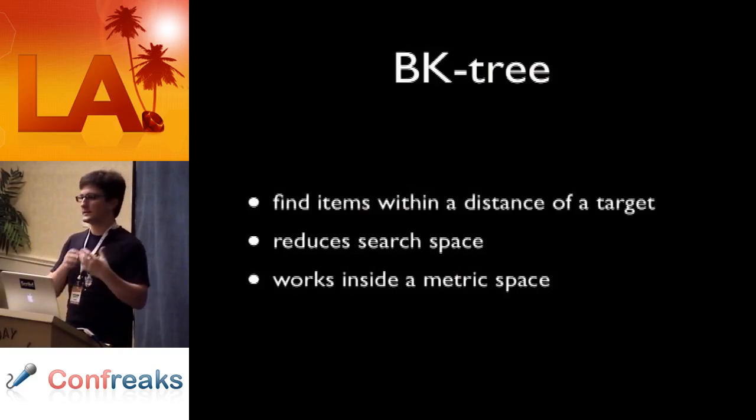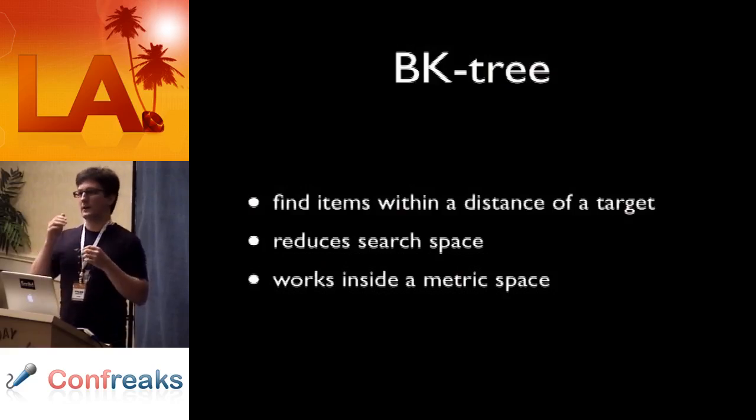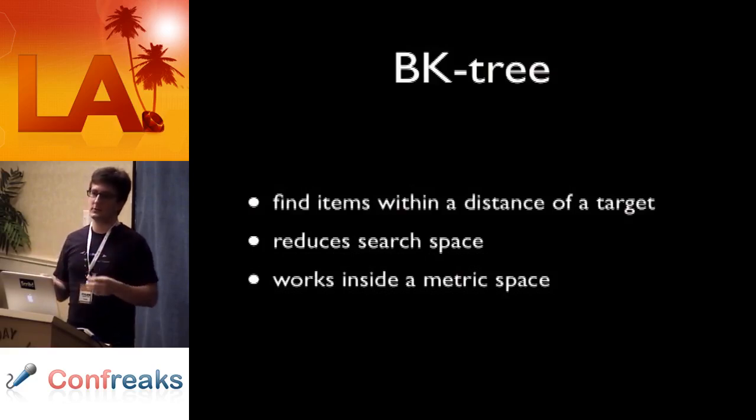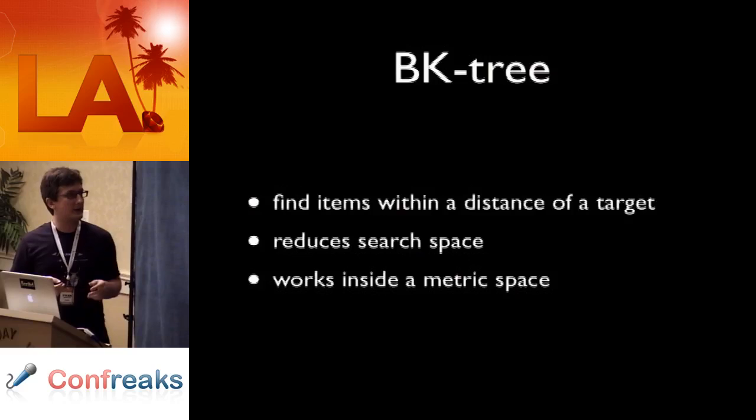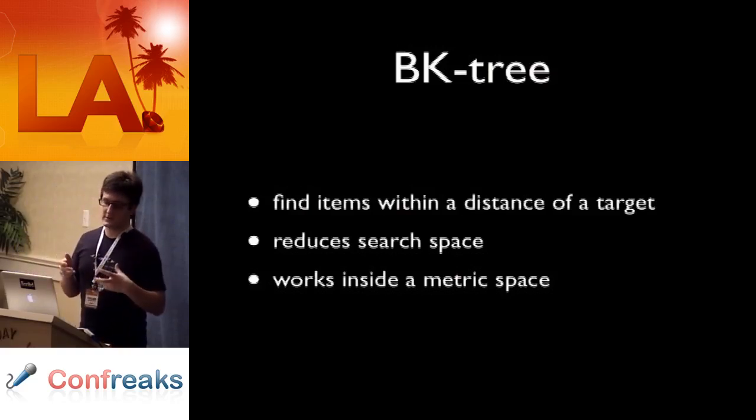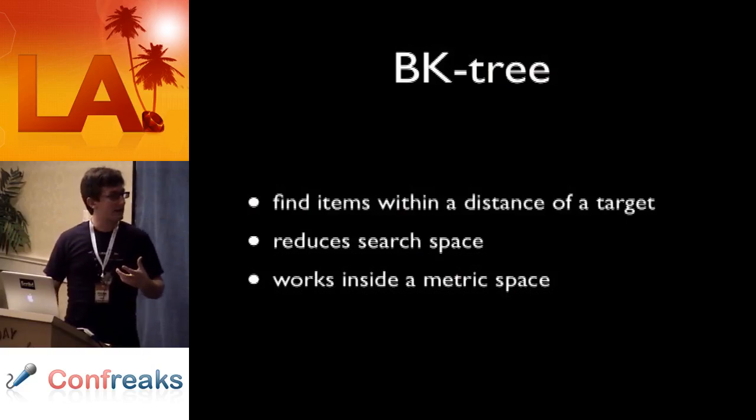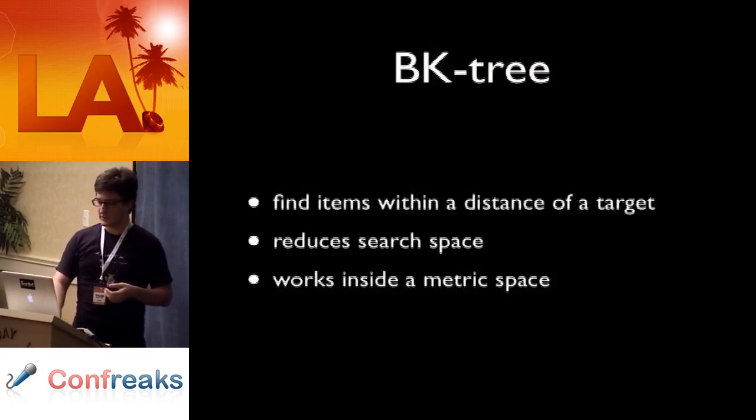And the point of this is to reduce search space. Traditionally, if you wanted to find the best match in a particular set of strings, you would have to scan through the entire length of strings, maybe use a priority queue to keep the ones that are closest to what you're looking for. But the point of a BK tree is to make it so that you don't have to actually scan through the entire list. It only works inside something called a metric space. The term metric space comes from traditionally like Euclidean distance, like actual distance between two points. But it turns out that Levenshtein distance also counts as a metric space.